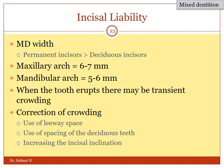Another concept in occlusion is incisor liability. The mesiodistal width of the permanent incisors is bigger than the deciduous incisors. So when the permanent teeth erupt, they don't have enough space because the deciduous teeth were occupying much lesser space. To compensate for this, generally the permanent teeth in the maxillary arch erupt labial to the deciduous teeth. In the maxillary arch, the incisor liability is 6 to 7 millimeters; in the mandibular arch, it is 5 to 6 millimeters. Whenever the permanent incisors are erupting, there may be transient crowding. To correct this, orthodontists generally use the leeway space, the spacing, or they may extract a premolar to compensate for the crowding in the later stages.